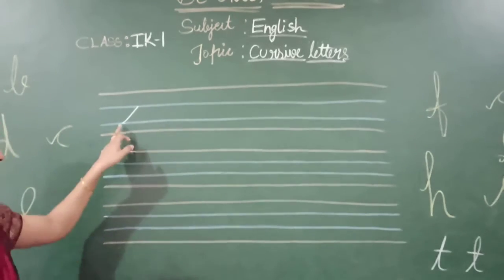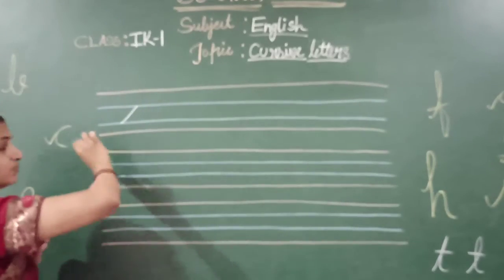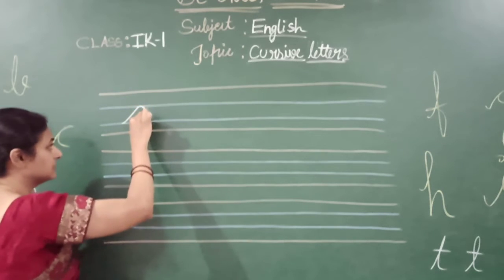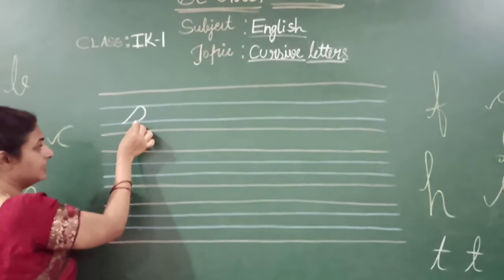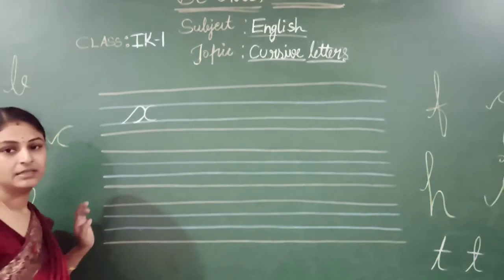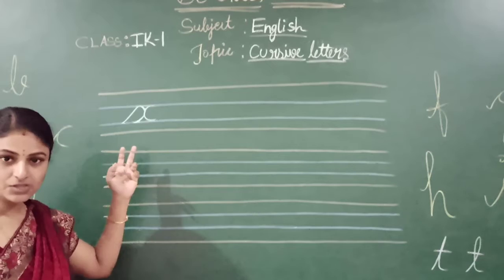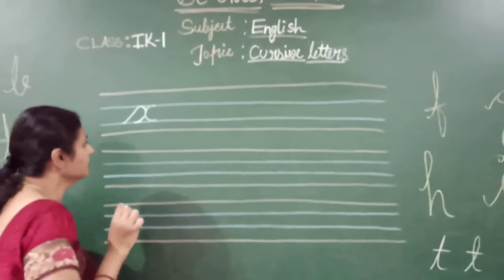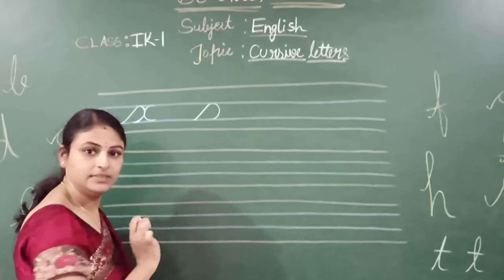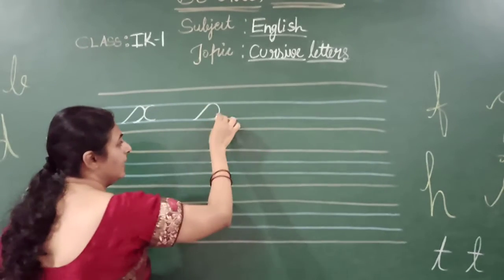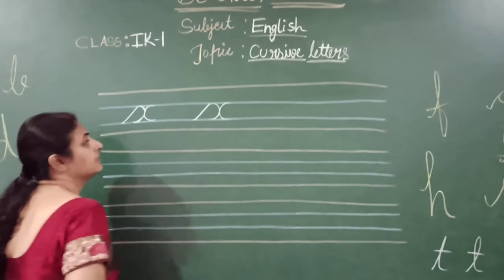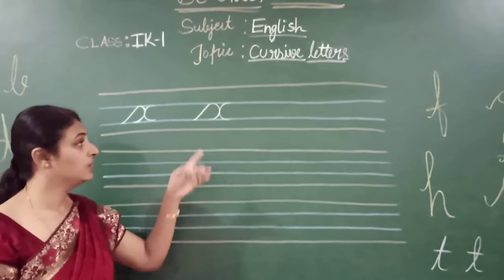Slanting line. First step is slanting line towards our side, again make a backward C, backward curve like this. Understood children? Again, go on the same line, make a C. This is the letter X. Understood children, listen carefully, you will understand.